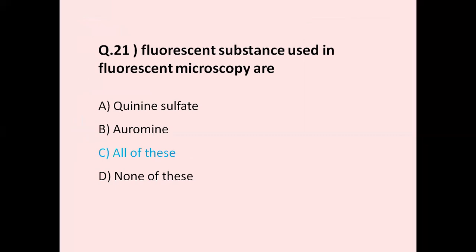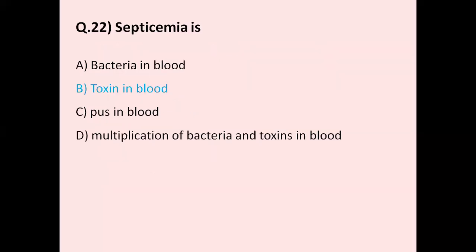Question 21: Fluorescent substances used in fluorescent microscopy are — option A quinine sulfate, option B auramine, option C all of these. Fluorescent microscopy uses quinine sulfate and auramine, both fluorescent substances used for measuring fluorescent quantum yield. Auramine is a fluorescent stain used to detect mycobacteria using the microscope. The correct answer is all of these — both A and B.